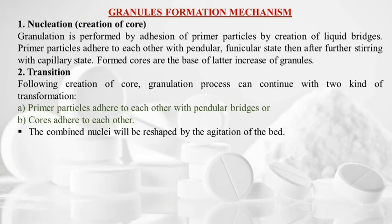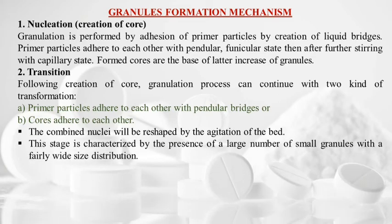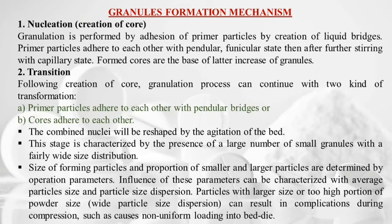The combined nuclei are reshaped by agitation of the bed. This stage is characterized by a large number of small granules with a fairly wide size distribution. Size of forming particles and proportion of smaller and larger particles are determined by operation parameters. Particles with too large a size or too wide a distribution can result in complications during compression, such as non-uniform loading into the die cavity.